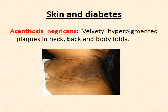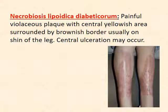Skin manifestations of diabetes include acanthosis nigricans, which presents as brown, velvety, hyperpigmented plaques in the neck, back, and axilla. Necrobiosis lipoidica diabeticorum appears as a waxy, yellowish central area surrounded by brownish borders, usually over the shins of the legs, with central ulceration. It is resistant to treatment and may be managed with blood sugar control, topical steroids, dermatological consultation, or even skin grafts.